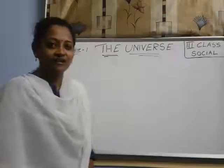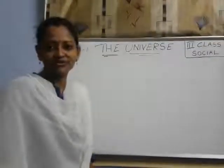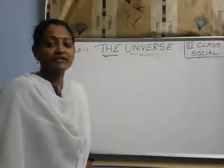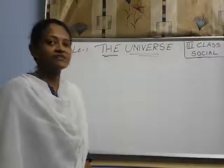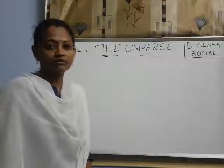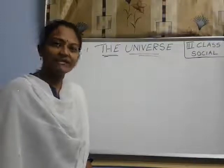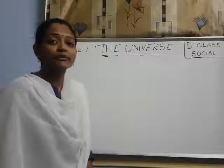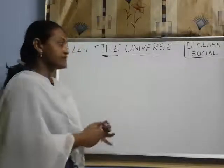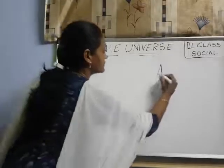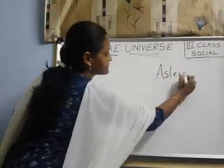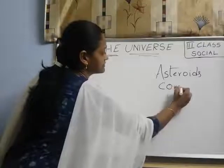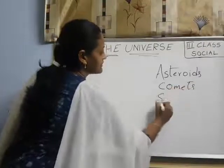Hello children, how are you all? Are you doing the worksheets we sent to you? Good. Now children, in the first part of the Universe lesson we learnt about the solar system, planets and stars. Now, in the second part, I am going to explain about asteroids, comets and satellites.